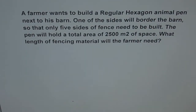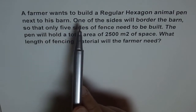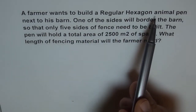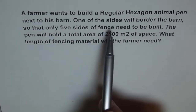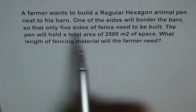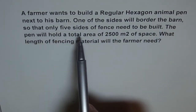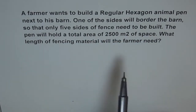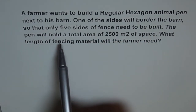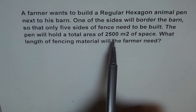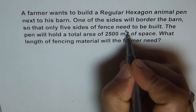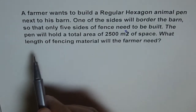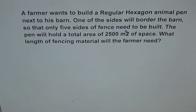Here is the application problem. A farmer wants to build a regular hexagon animal pen next to his barn. One of the sides will border the barn so that only five sides of the fence need to be built. The pen will hold a total area of 2,500 square meters of space. What length of fencing material will the farmer need?